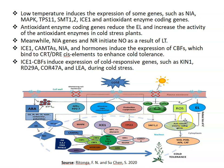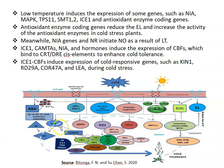Just look at this diagram. These induced genes include NIA genes, MAPK, TPS-11, SMT-12, ICE-1, and also antioxidant enzyme coding genes. Antioxidant enzyme coding genes reduce ethylene and increase the activity of antioxidant enzymes in cold-stressed plants. Meanwhile, NIA genes and NR initiate nitric oxide (NO) production as a result of low temperature.